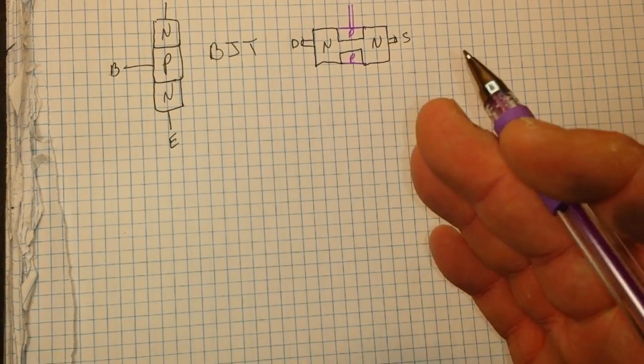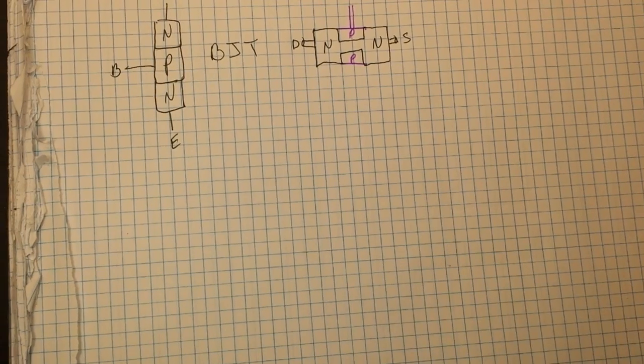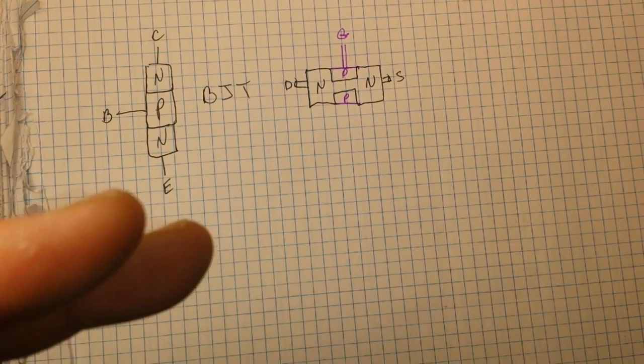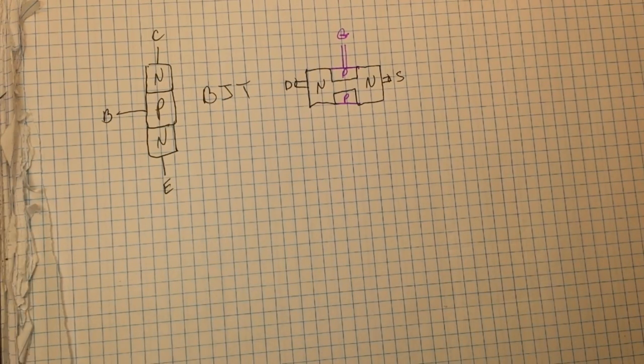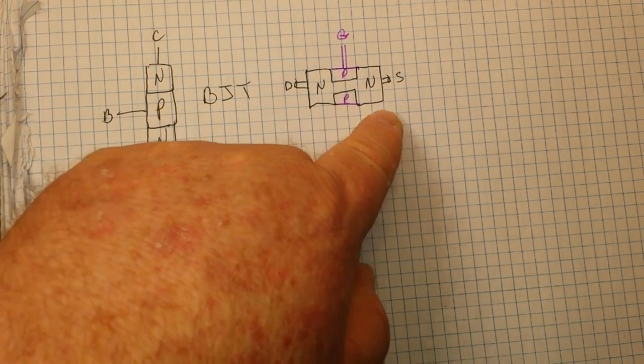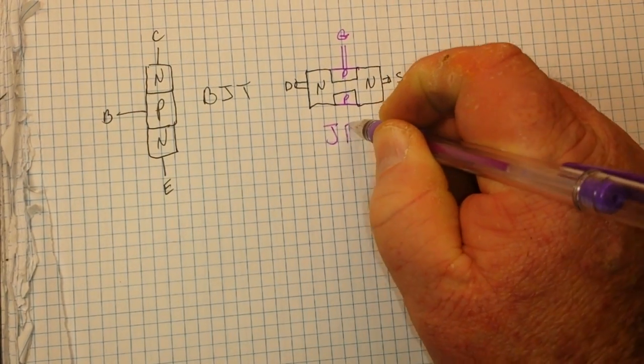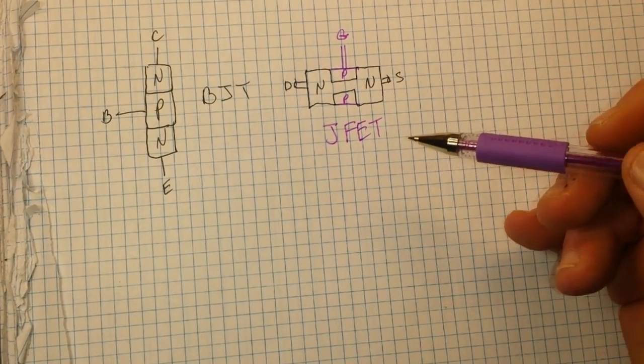So because it is a FET, a field effect transistor, once you apply a voltage to the gate, the current runs from drain to source. If you remove the voltage, it's still going to run. You have to place a negative voltage onto the gate in order to stop it. That's one of the advantages of the JFET over a BJT.